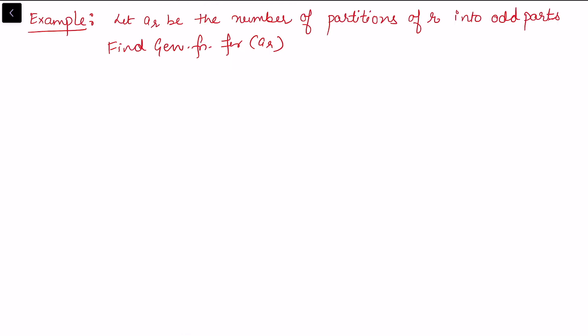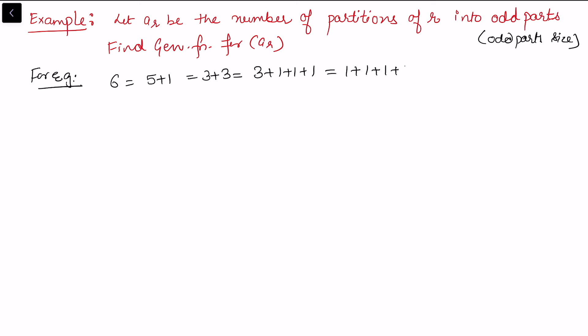In the next example, let ar be the number of partitions of r into odd parts. A part is called odd if and only if it has an odd value. For example, the partitions of 6 into odd parts are: 5+1; 3+3; and 1+1+1+1+1+1. These are the partitions of 6 into odd parts. There are 11 total partitions of 6 if we include all parts, but restricting to odd parts gives only these three.